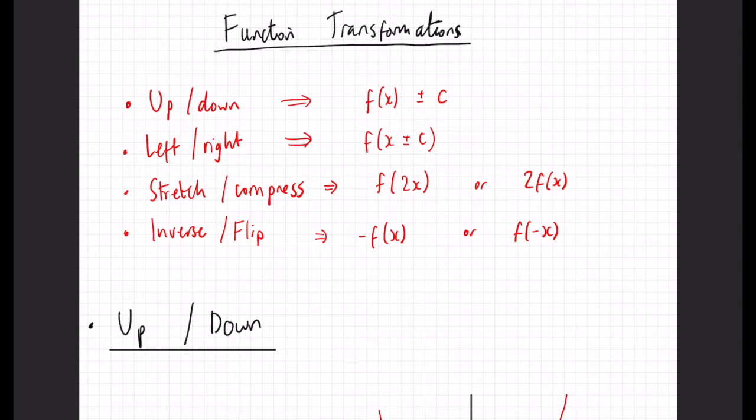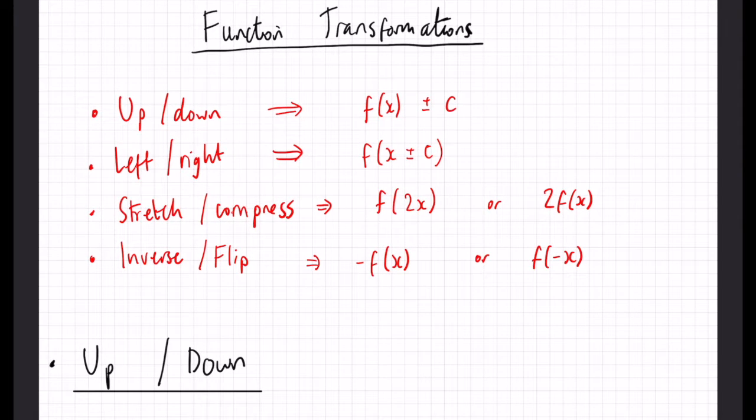Here are a set of the rules generally. If we want to move a function up or down, we add the number to it outside of that bracket. A little note to make: when the transformation happens outside the bracket, it does as you would expect. So an addition, adding c, would move it up. Normally we associate adding to moving up or to the right when we talk about vectors, for example.